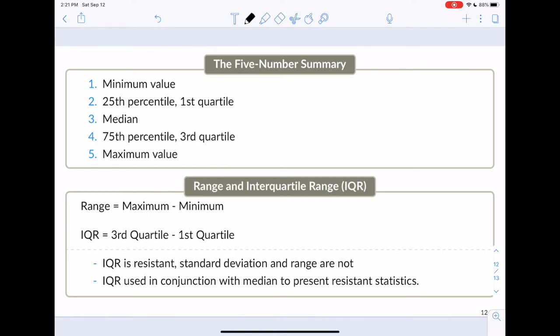And these five numbers are the minimum value, the 25th percentile, or the first quartile. So, this is going to be the value with which 25% of the data is below it.